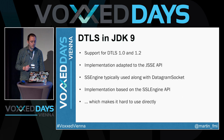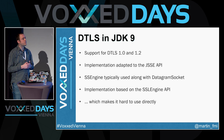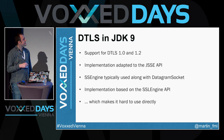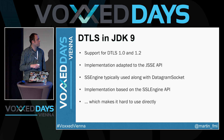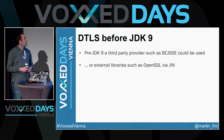In JDK 9, we have support for DTLS 1.2 and 1.0. The implementation is adapted to the Java Secure Socket Extension API. The SSL Engine class is used to provide DTLS support, meaning the DTLS API in JDK 9 is non-blocking. The SSL Engine is typically used with the Datagram Socket API. The SSL Engine API is fairly complex and not widely adopted, so getting started with DTLS in JDK 9 is somewhat non-trivial.